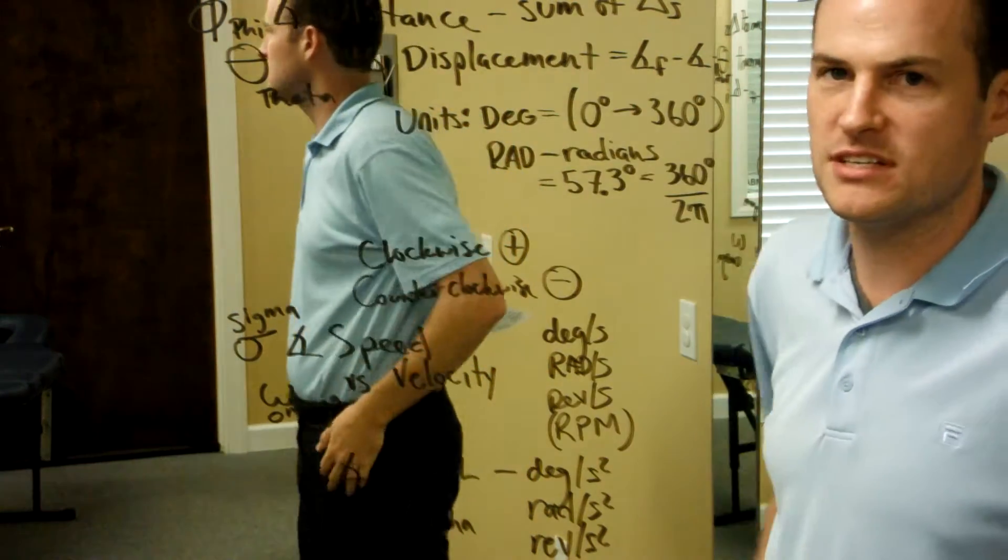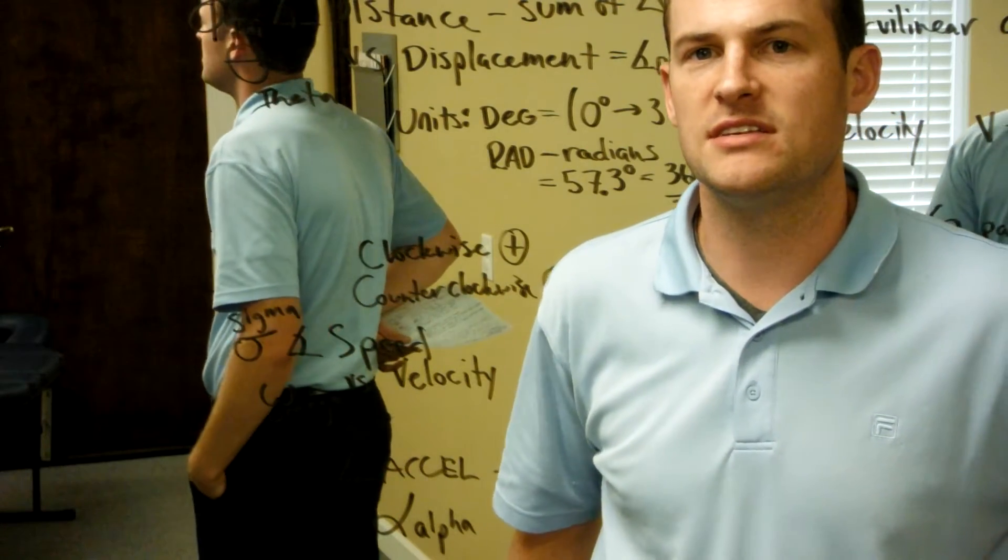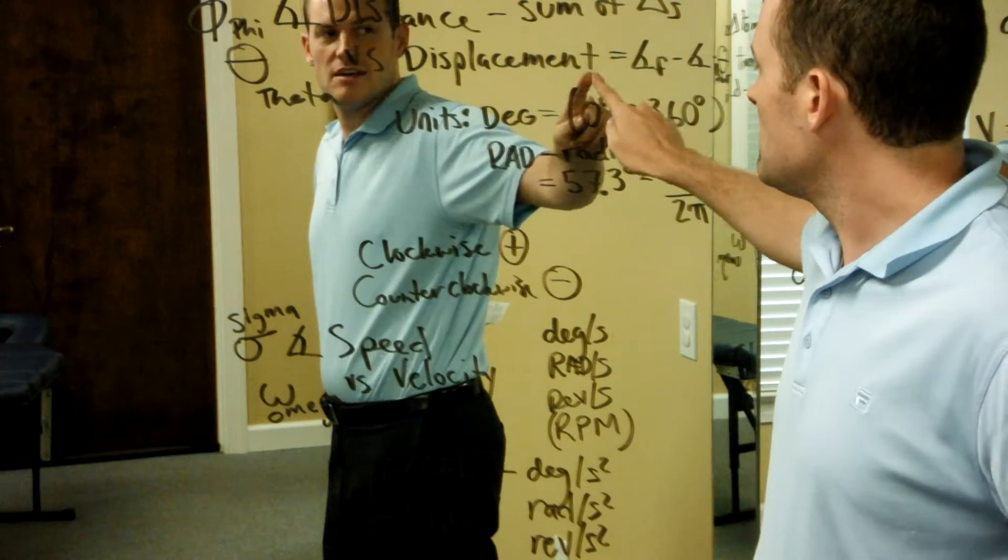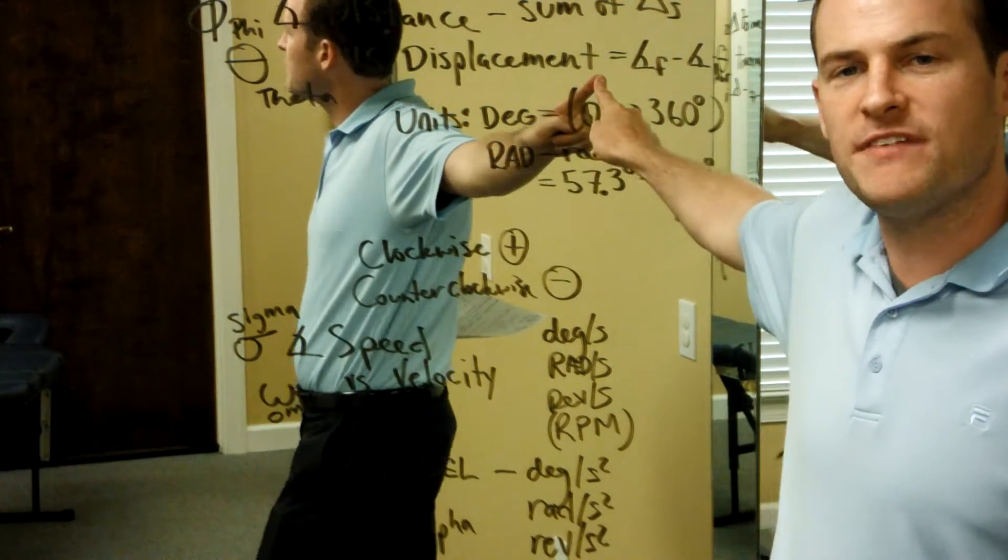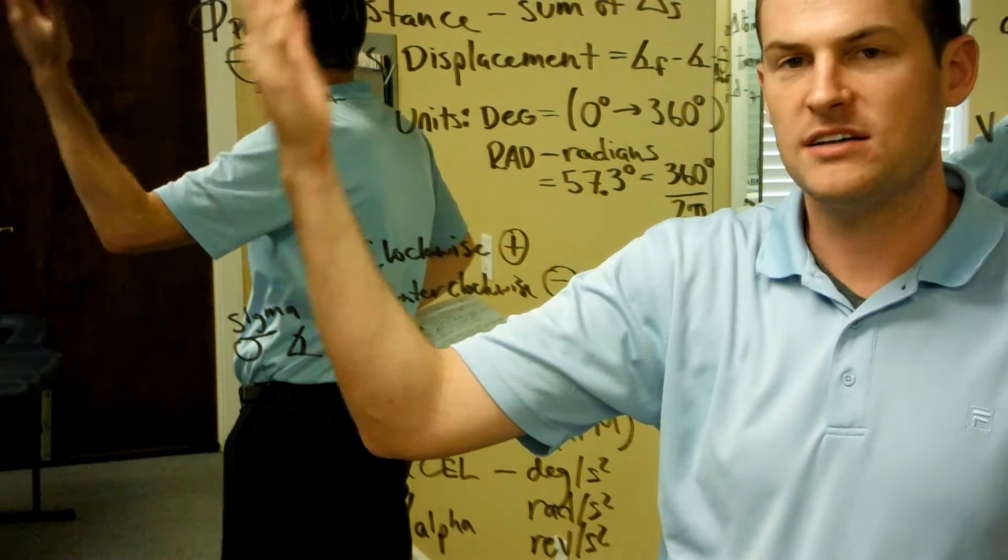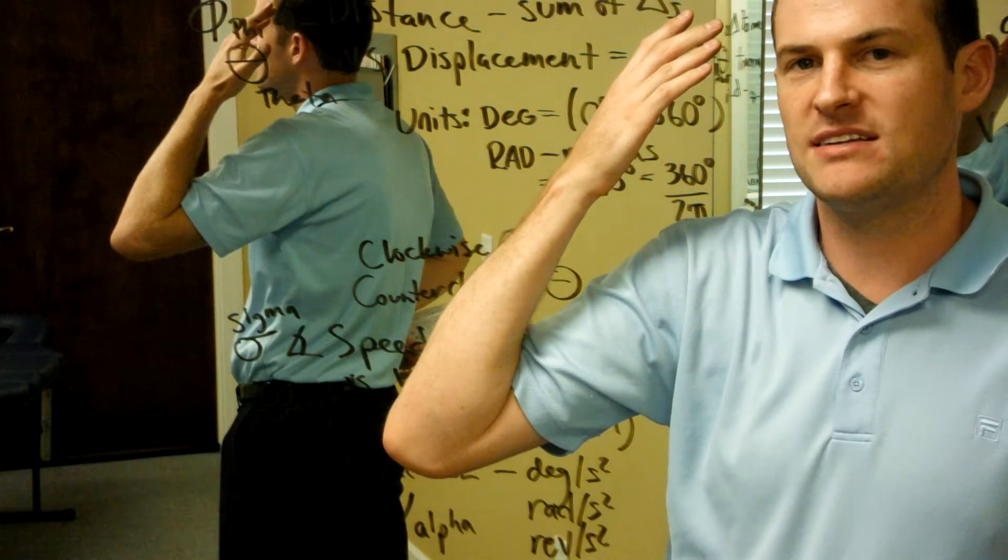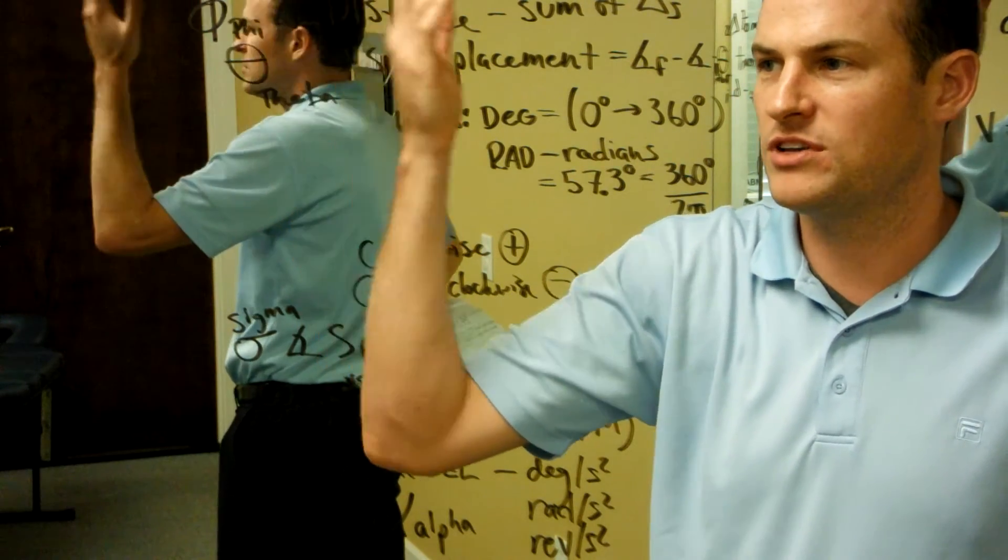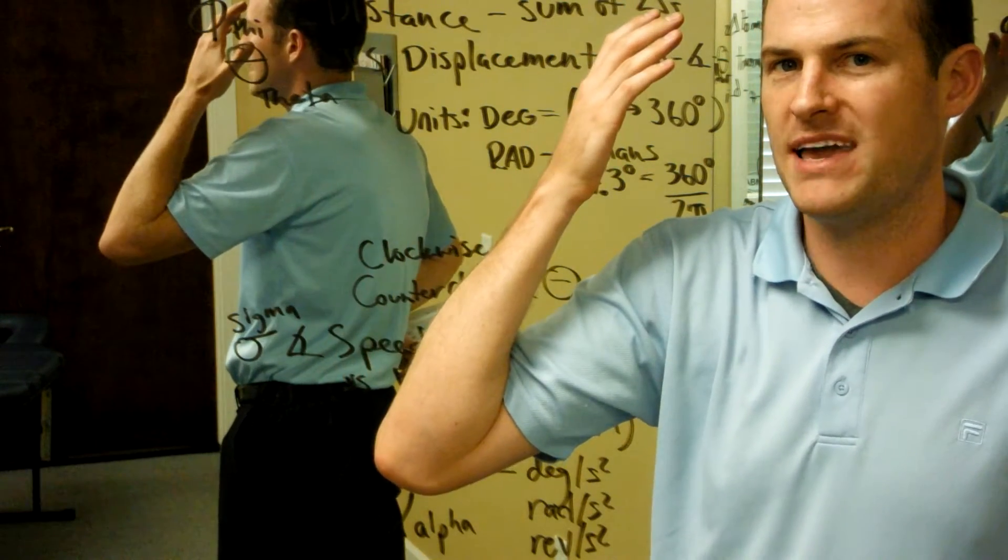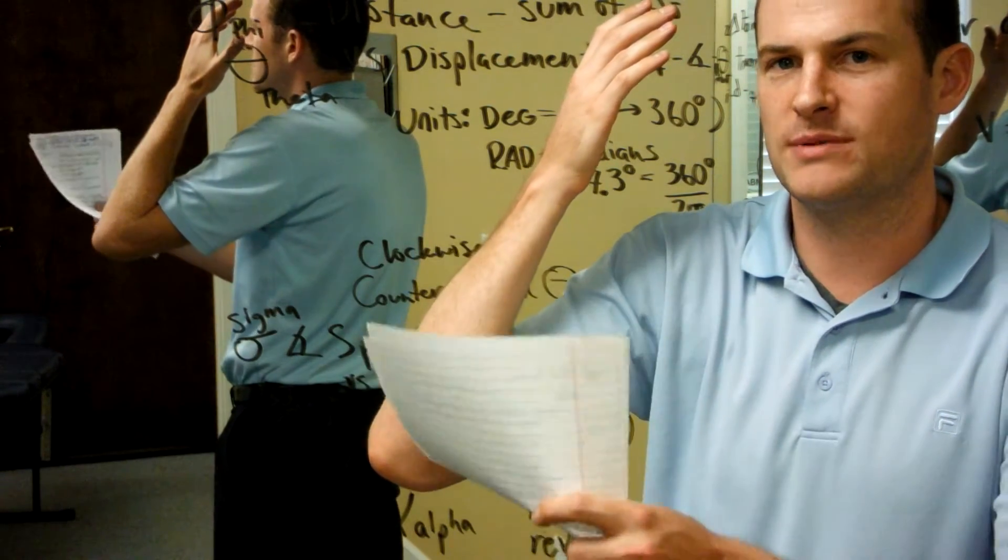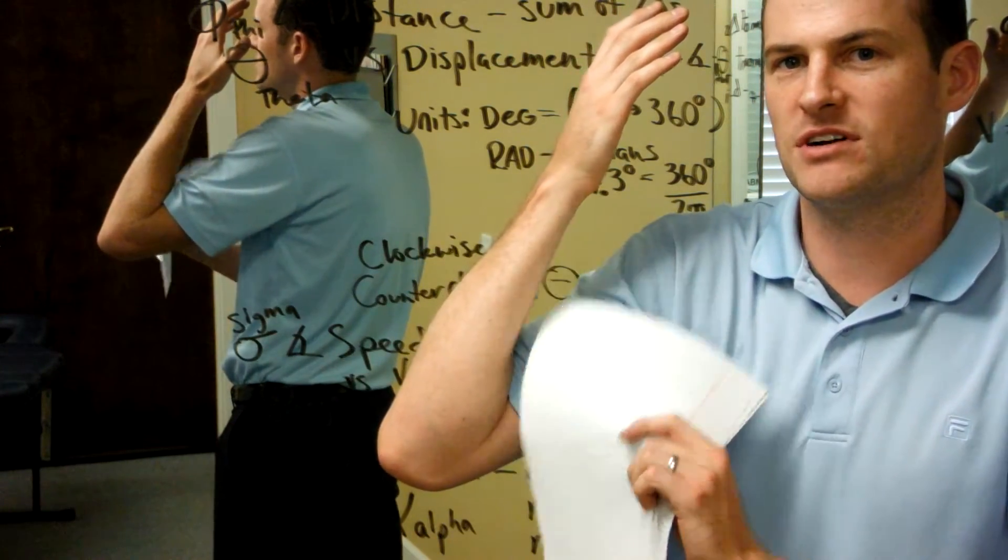The same is true for angular distance and displacement. Angular distance is the sum of all of the changes of angles. Angular displacement is the final angle from the initial. If I move from point A to point B, my distance and displacement is the same if I only use one motion. But if, in order to get there, I were to use many motions, my angular distance would be a sum of all of those motions, whereas my angular displacement is only from start to finish.